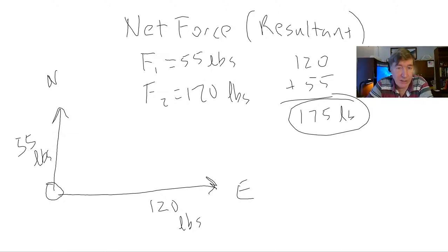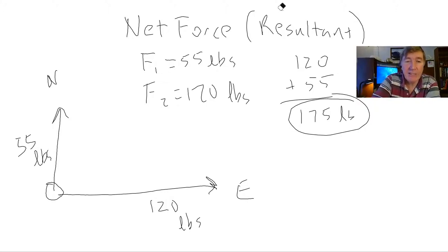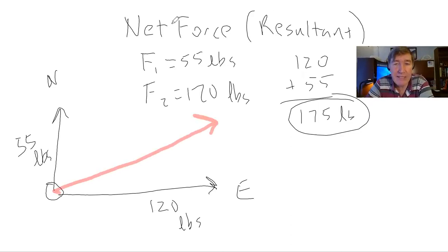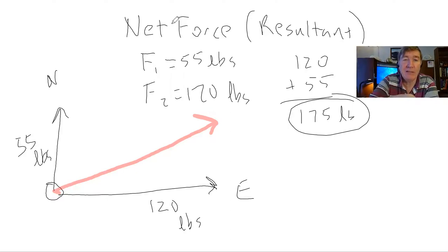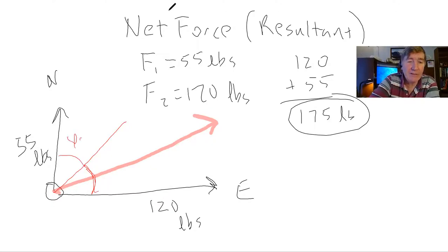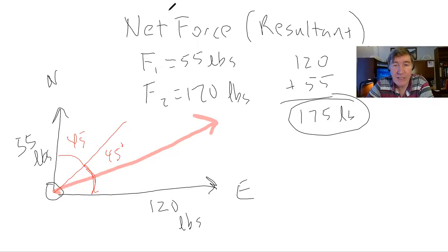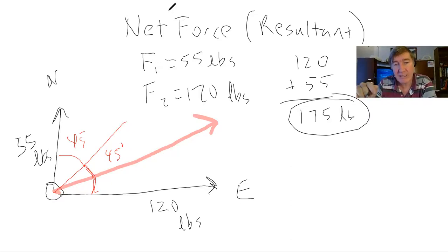With one force pulling north and one pulling east, the net result will be that the object is pulled to the northeast-ish. I say 'ish' because northeast has a very specific meaning — exactly 45 degrees. In this case it won't be 45 degrees because the easterly force of 120 pounds is greater than the northerly force of 55 pounds, so it will be more east than north.